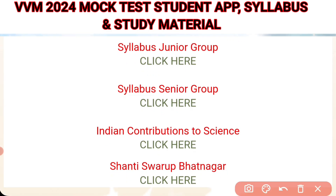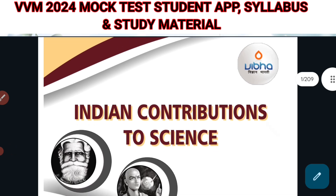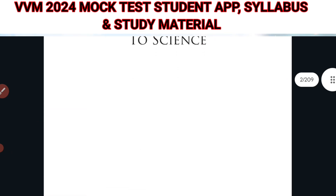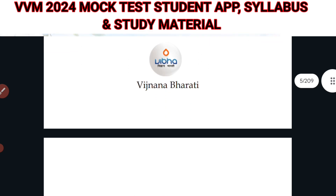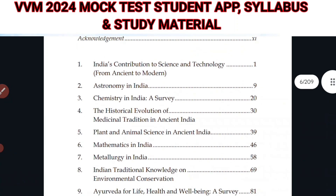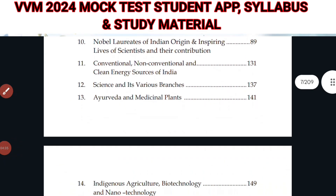Next, we have the study material on Indian contribution to science, which will be asked in Section A. After clicking, the Indian contribution to science booklet opens — it is compiled by Vignana Bharti and is 209 pages long. You should go through all of it for exam preparation. Topics include Indian contribution in science and technology from ancient to modern times, astronomy in India, chemistry in India, historical evaluation, and evolution, among many others.